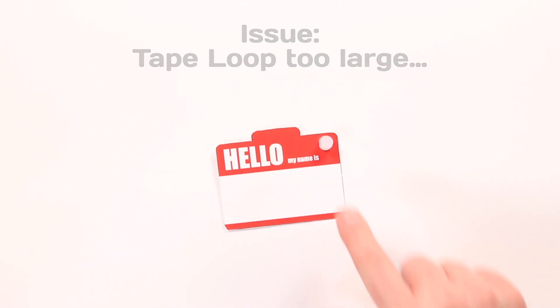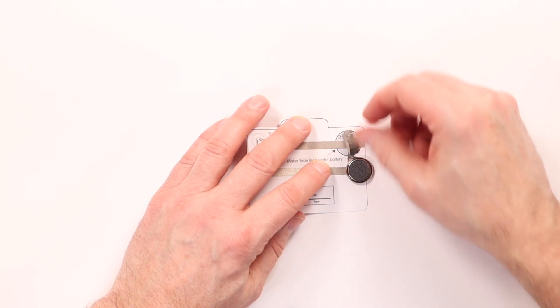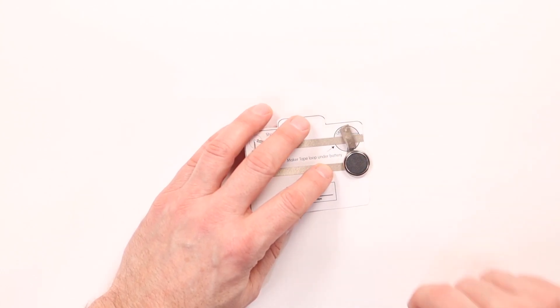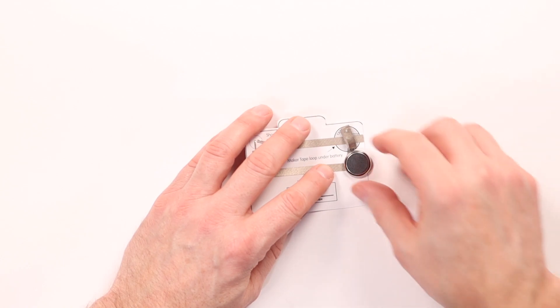This next one is tricky. It may light up. It may kind of blink on and off. Here's the issue. Our tape loop is very large. Now, if our tape loop is too large, it may touch the bottom or negative side of the battery, as well as this edge, which is actually the positive or top side of the battery. So the problem is it may short out.